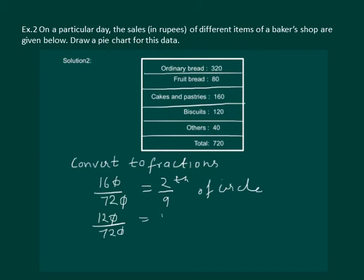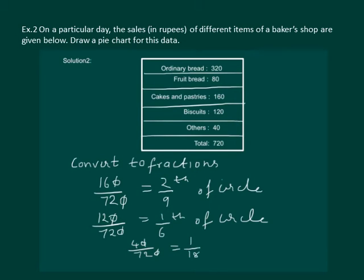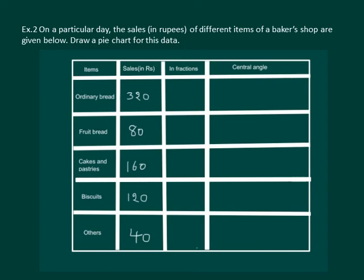Then 120 out of 720 will be 1 by 6th of the circle, and lastly 40 out of 720 will be equal to 1 by 18th of the circle. We can complete the table: it comes out to be 4 by 9th, 1 by 9th, 2 by 9th, 1 by 6th, and 1 by 18th. Now it remains to calculate the corresponding angles to draw the pie chart.